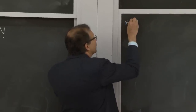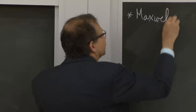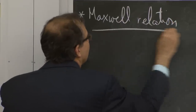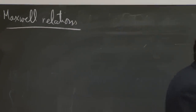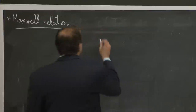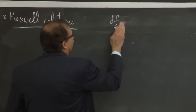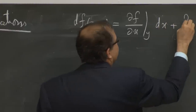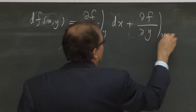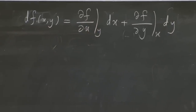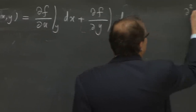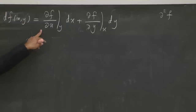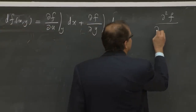Towards the end of last lecture, I mentioned that we can get a number of Maxwell relations by noting that mixed second derivatives are independent of the order of taking derivatives. So if you have some dF of x and y written as (∂F/∂x)_y dx + (∂F/∂y)_x dy, then the order of the second derivatives — obtained by taking either a derivative of the first term with respect to y or the second term with respect to x — doesn't matter.